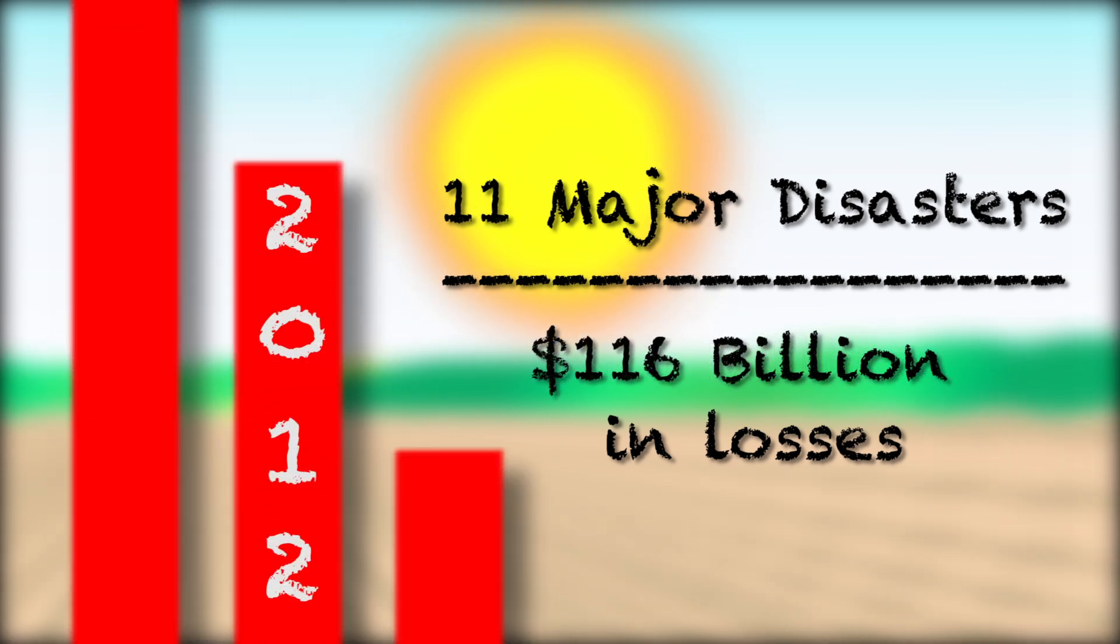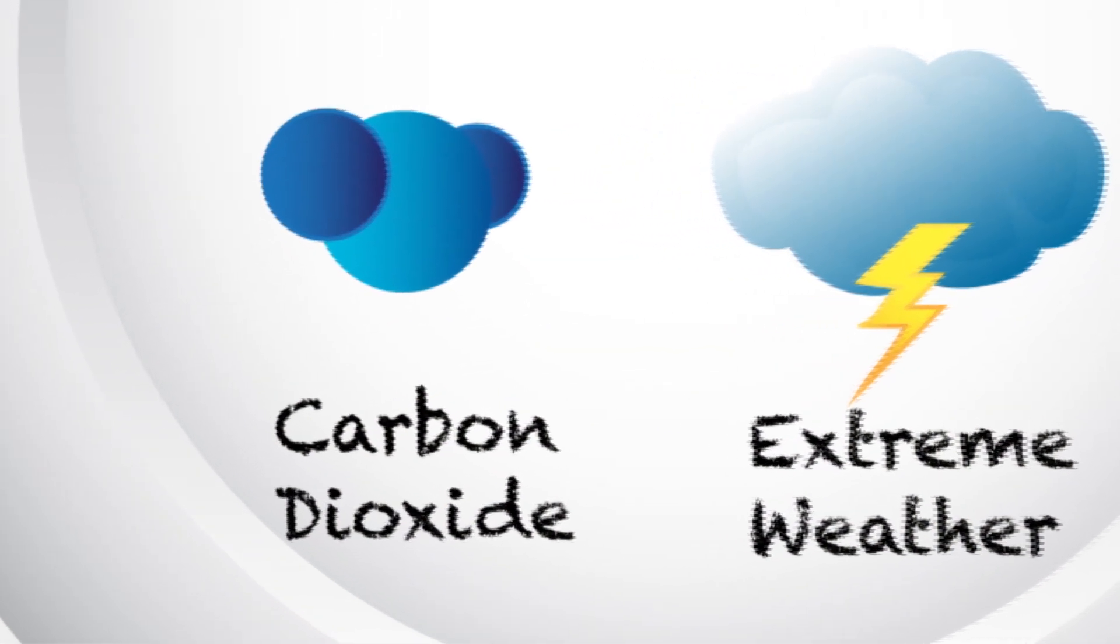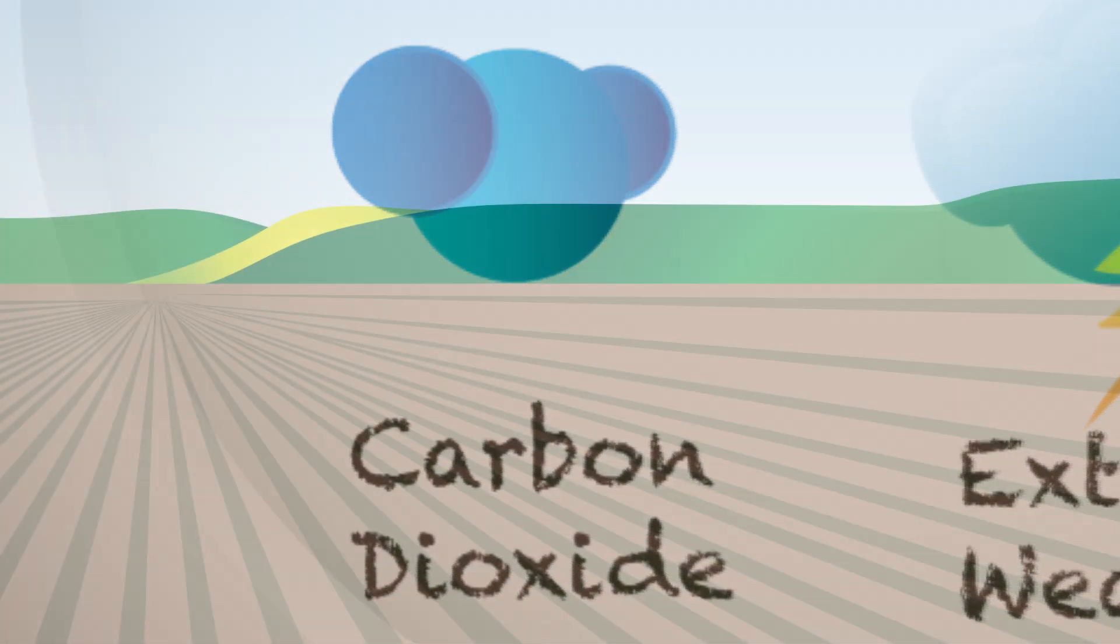2012 is a close second, and severe storms continue to cost us billions. All of these changes circle back to the key driver of climate change, increased carbon dioxide, which has its own effect on agriculture.